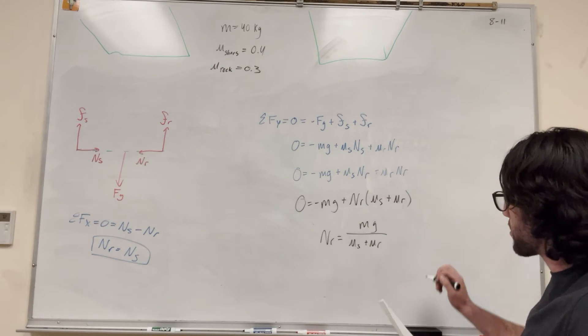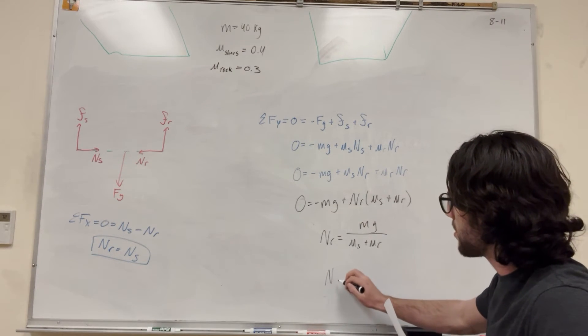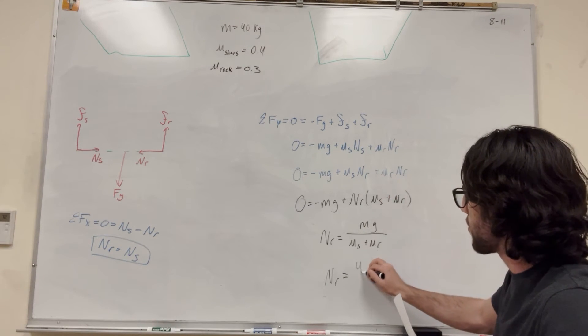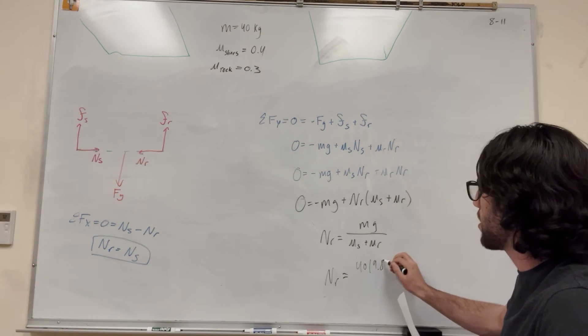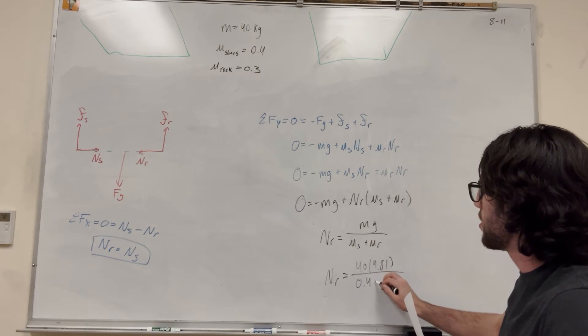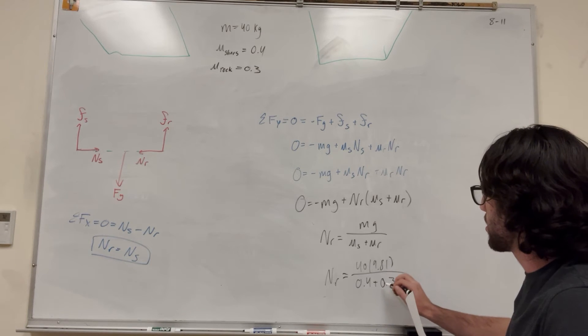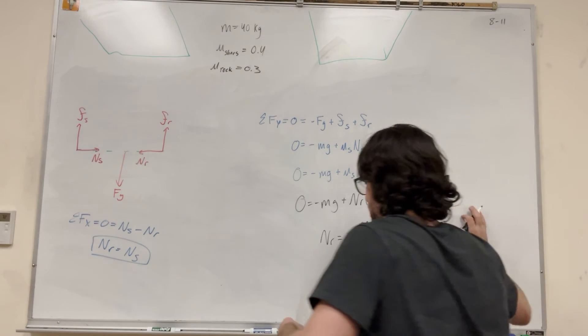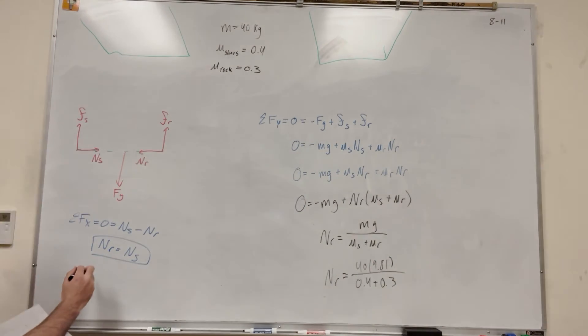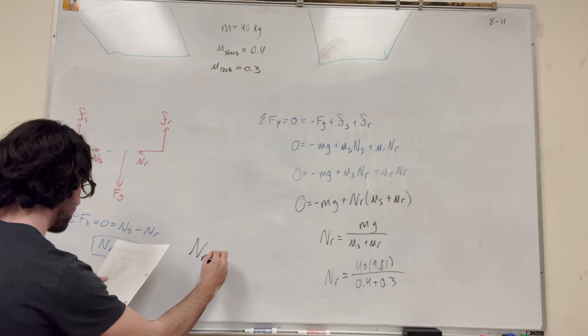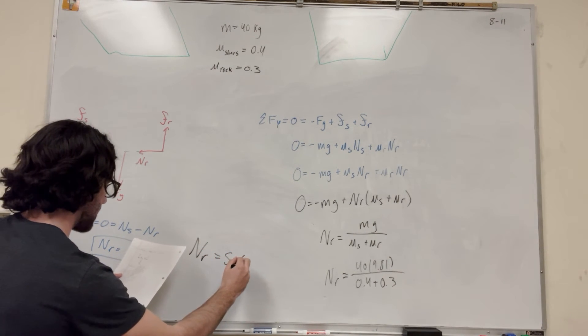So then if we just plug in our numbers now, we're going to get that normal of the rock is equal to mass, so the gravity, or mass is 40, gravity is 9.81. And then the static friction is 0.4, 0.3. And then if you solve this, you get, let me write it over here, 561 newtons.